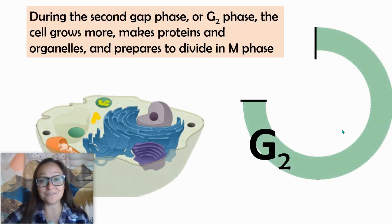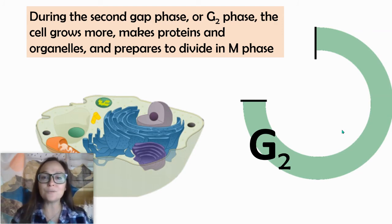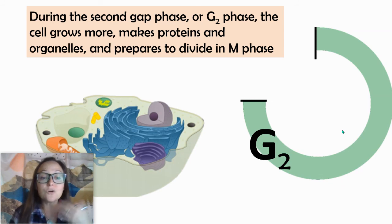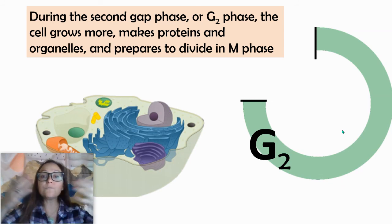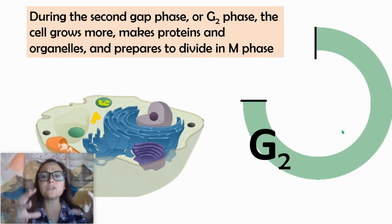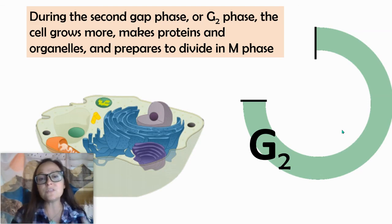And then our last phase of interphase is G2. If we're thinking about taking our cell and dividing it into two, not only do we need to double the DNA so each daughter cell gets an exact copy, but we also need to increase the number of organelles. So in G2, our organelles will multiply. We'll start to make some proteins that we need for the cell cycle, and the cell will grow a little bit more because we are dividing it in half. So in G2, there are the final preparations for M phase.